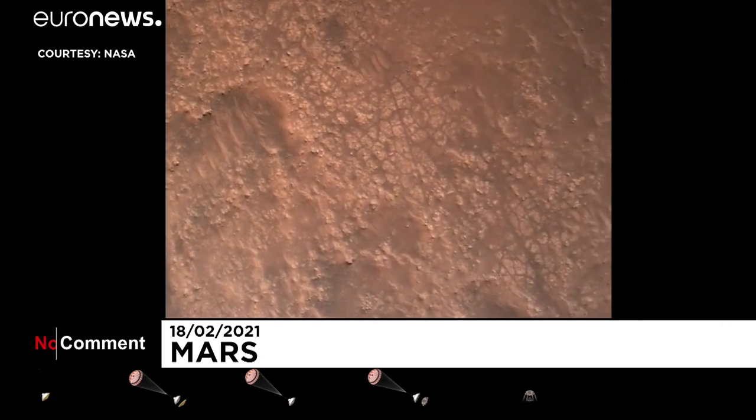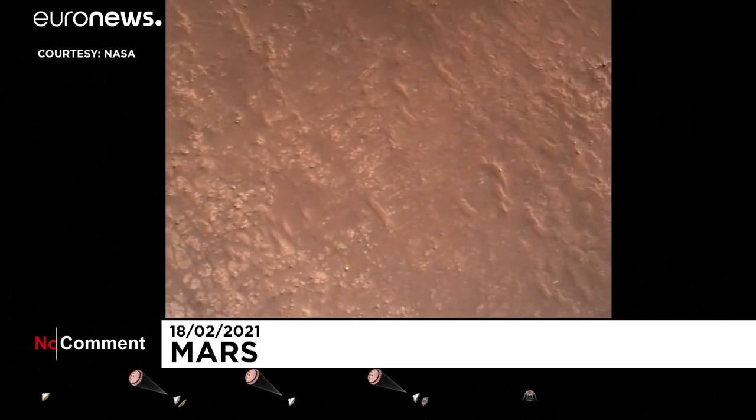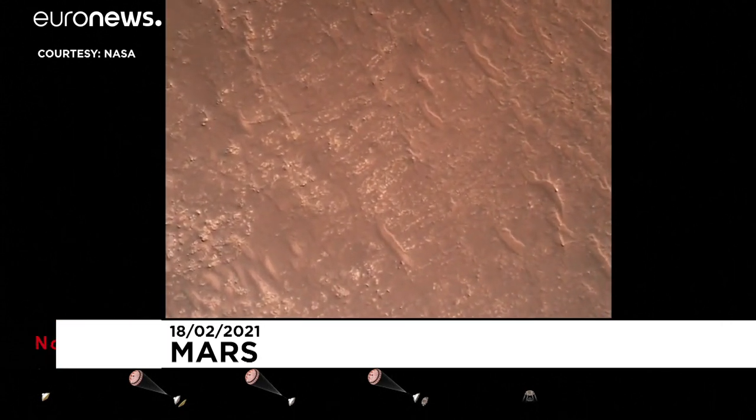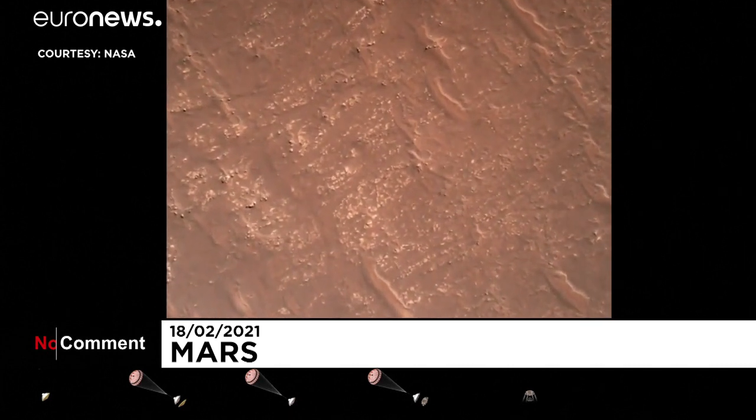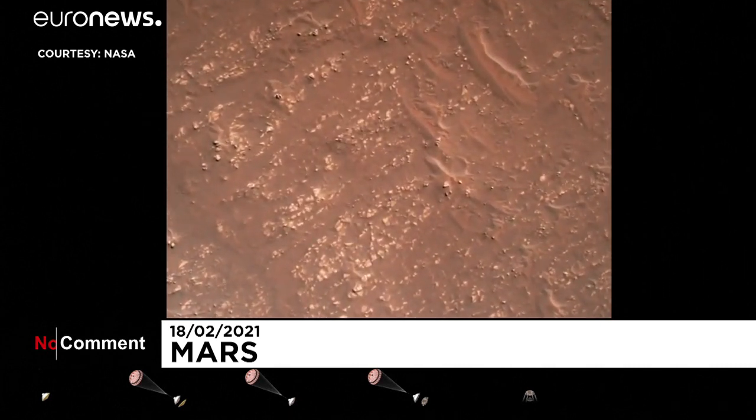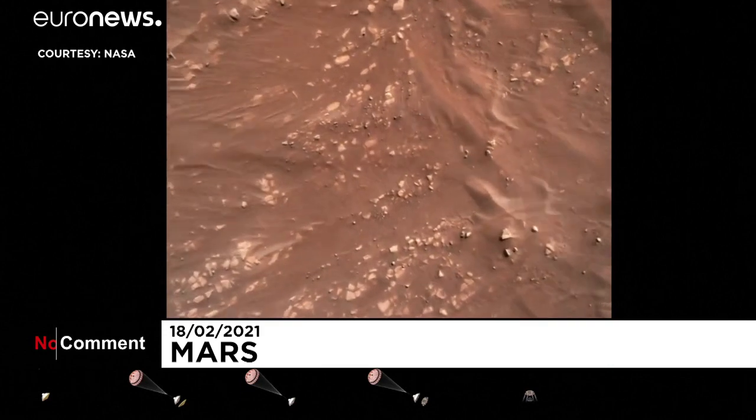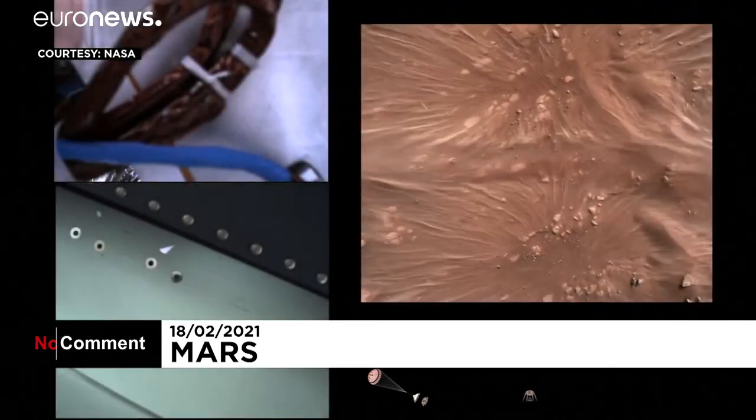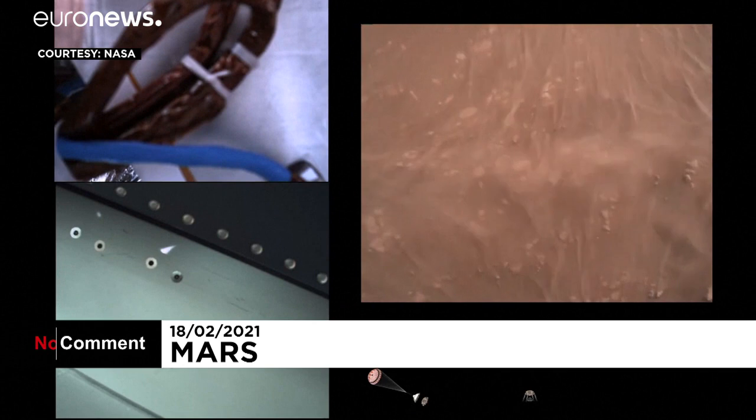Current speed is about 30 meters per second, altitude of about 300 meters off the surface of Mars. We have started our constant velocity accordion, which means we are conducting the sky crane, about to conduct the sky crane maneuver.